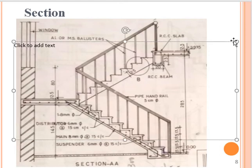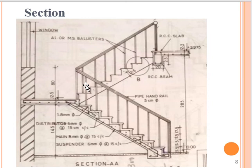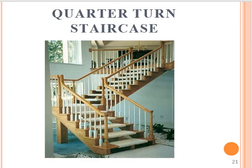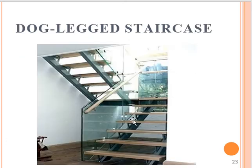Now let's go to the section. First, we have a dog-legged staircase. There are types of staircase: first we have a straight staircase where you can change direction. If you have a quarter-turn staircase, you take a flight to 90 degrees. In a dog-legged staircase, you go 180 degrees.